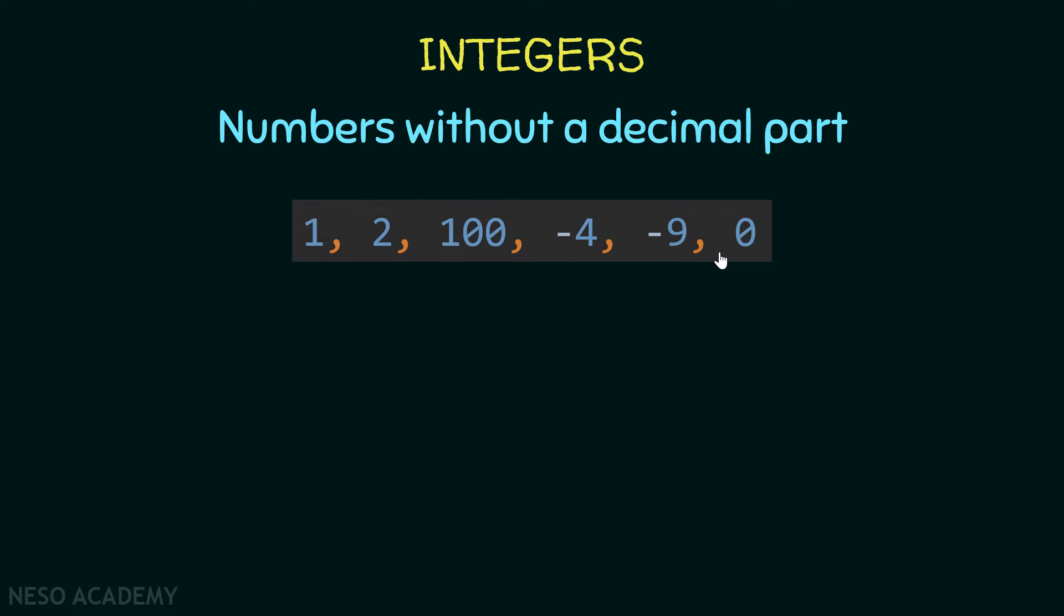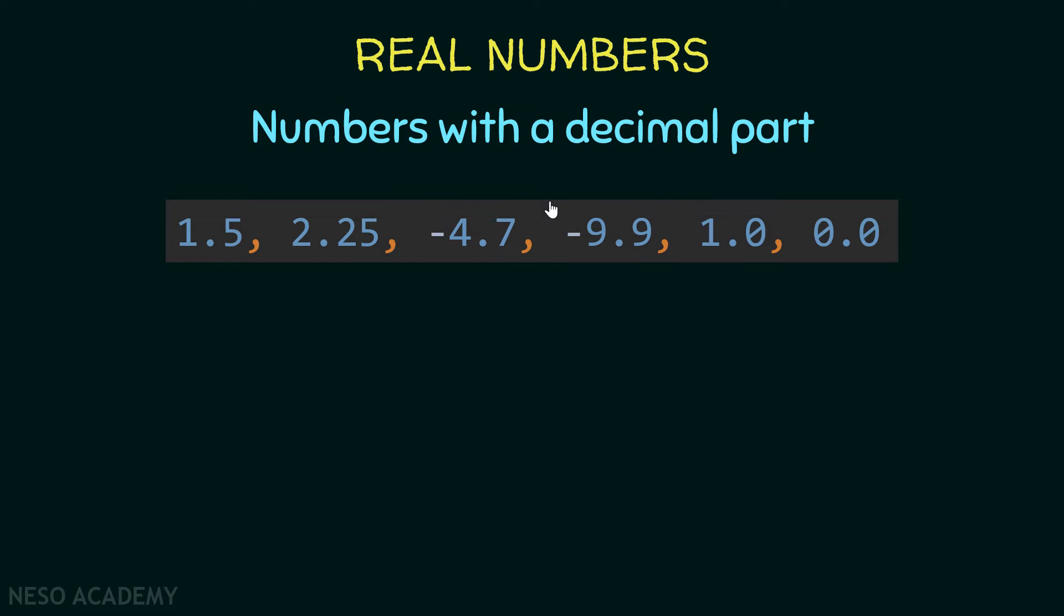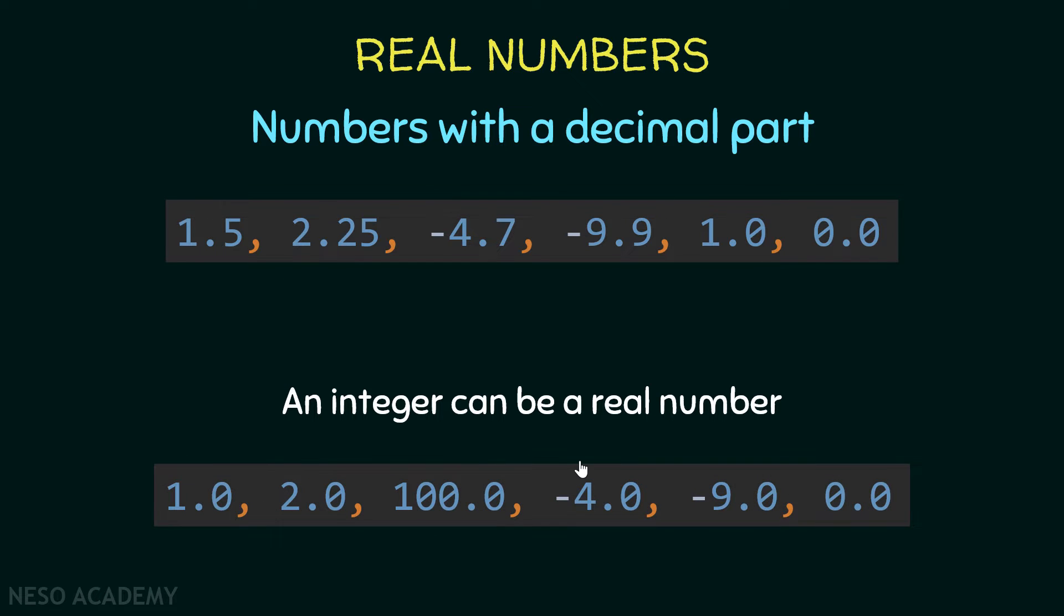Now let's see real numbers. They are numbers with a decimal part. Here are some examples. As you can see, all these numbers have a decimal part, even 1.0 and 0.0. They are considered real numbers. We can conclude that an integer can be a real number. For example, if we have 100 and simply add 0.0, this will be a real number and will not be an integer anymore.